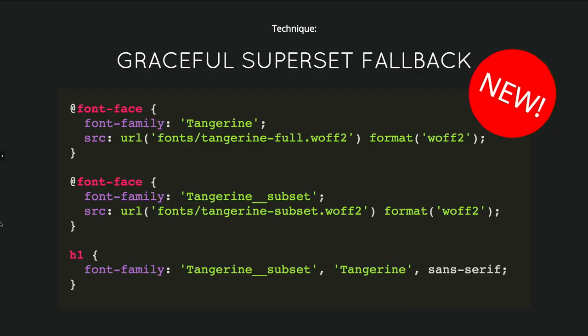I came up with a technique — or at least I haven't seen it in the wild yet — which I call graceful superset fallback. The idea is to create two different fonts with different names and use the subset font before the original. The browser starts by downloading the Tangerine subset. If all the glyphs needed on the page are in the subset, it doesn't download the original font. But if a glyph is missing, it kicks off the download of the original font, so you still have all glyphs available. Loading the subset is smaller and faster, giving quick rendering, and if dynamic content comes in later that you hadn't anticipated, you can still support it.